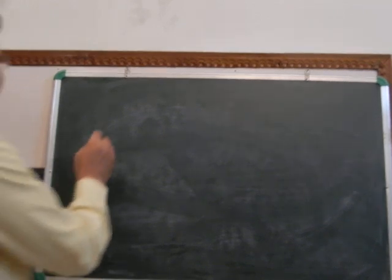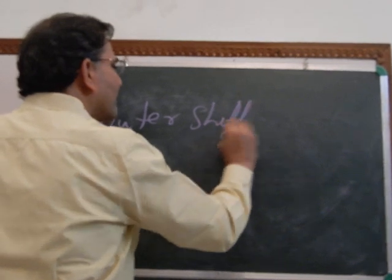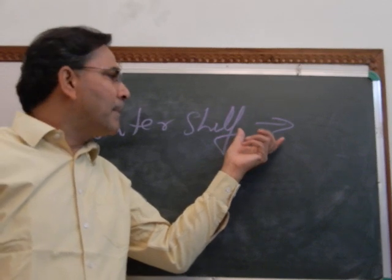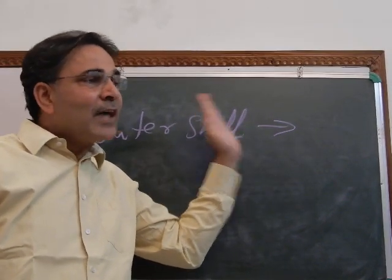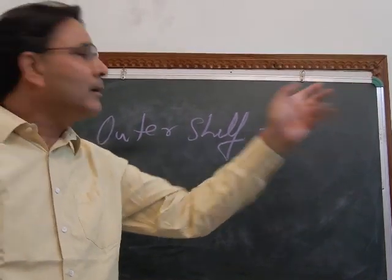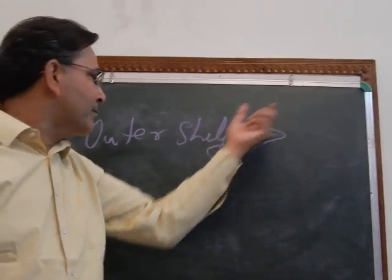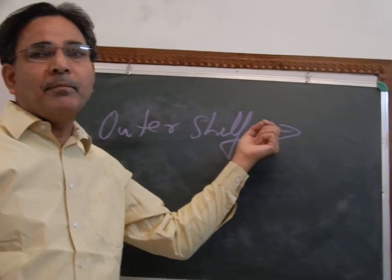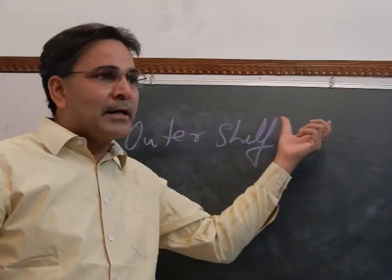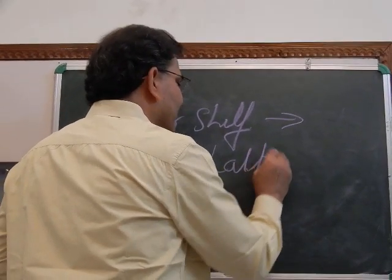The outer shelf is that part of the shallow marine environment which consists of basically planktonic organisms. The size of the sediment decreases because we are moving away from the shoreline. The inner shelf consists of sand-size particles — generally ooids — whereas the outer shelf consists of clay-size particles. These clay-size particles form the very important deposit known as chalk.